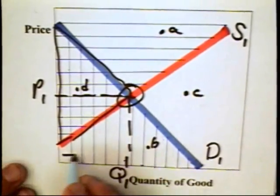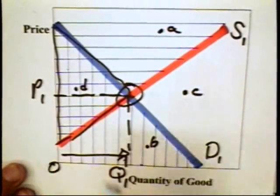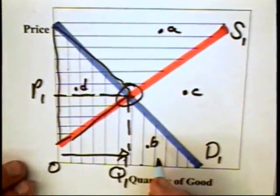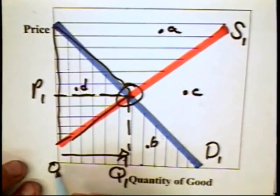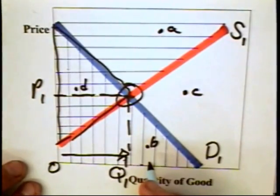That is, any quantity between zero and Q1 is acceptable to consumers and producers.